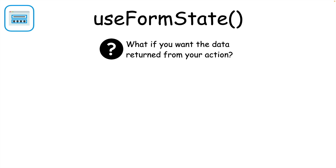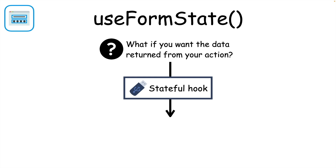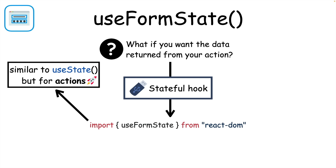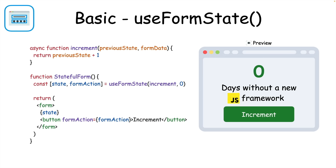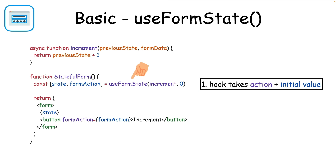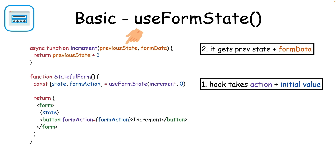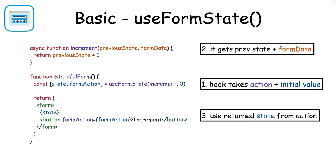But what if you want the data returned from an action function? For that, you can use a new stateful action hook called useFormState. It's pretty similar to the useState hook, except it uses an action function to set the new state. To make a simple counter using a form, you first give useFormState an action function to call and an initial state value. When the action is called, you can access both the previous state value and the form data that was submitted. Finally, to set state, you return the new state from the action and use it in your component.